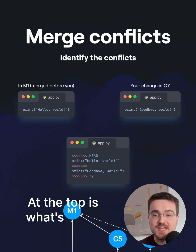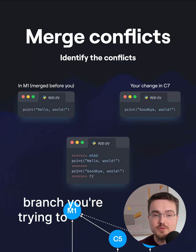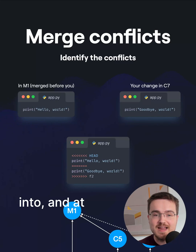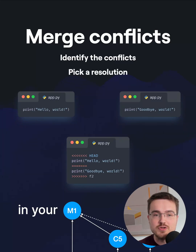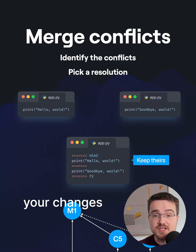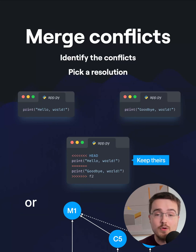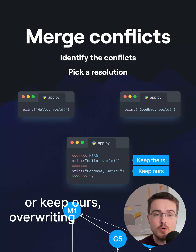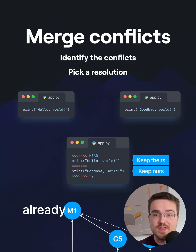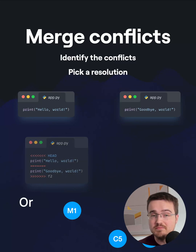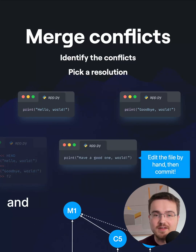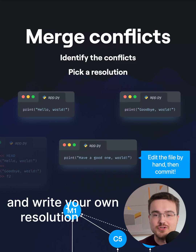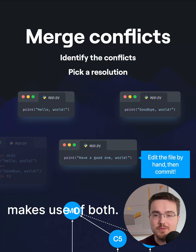At the top is what's in the branch you're trying to merge into, and at the bottom is what's in your commit. You can either keep theirs so your changes don't get used, or keep ours, overwriting what's already there. Or you can just delete everything and write your own resolution that makes use of both.